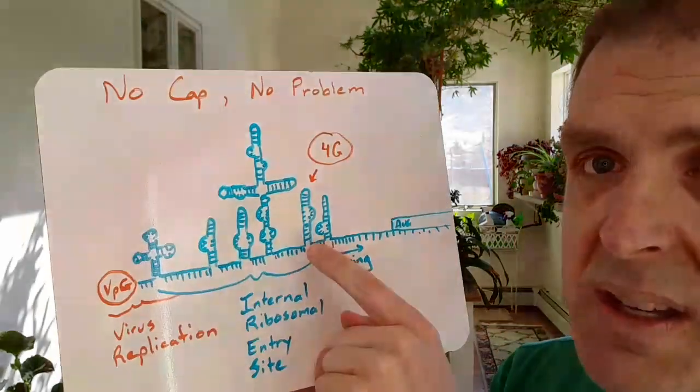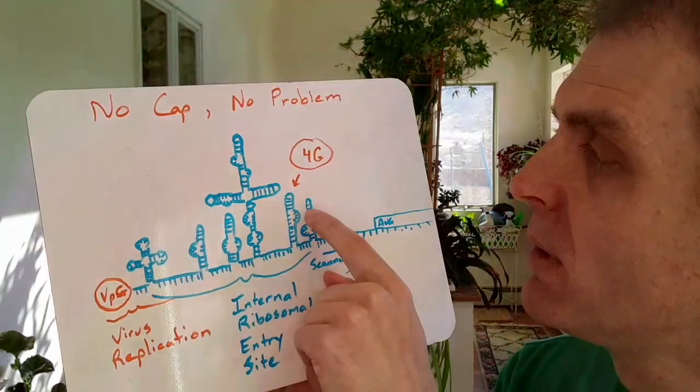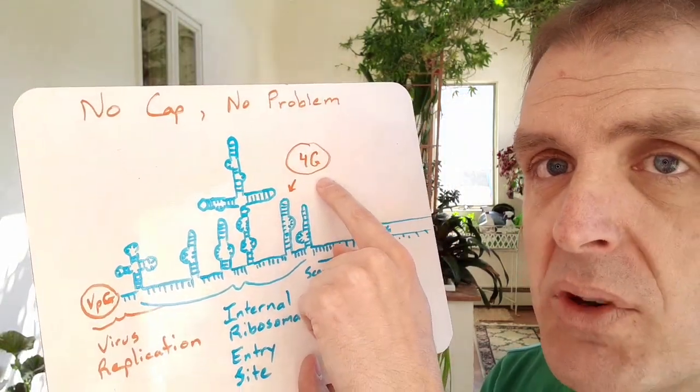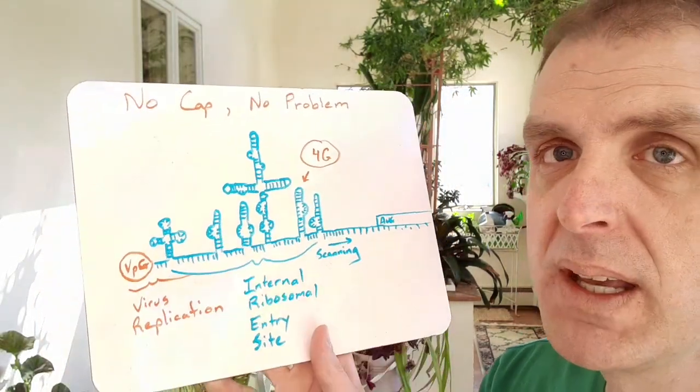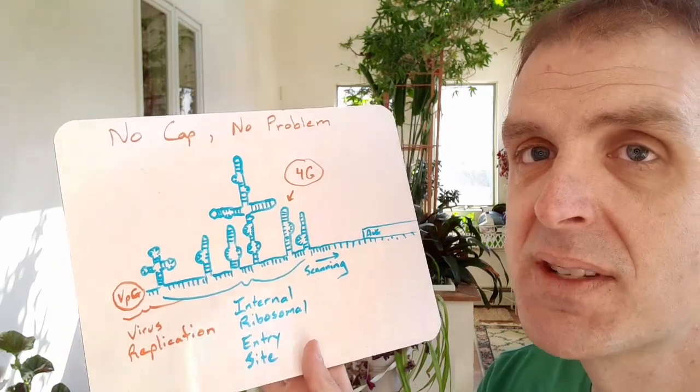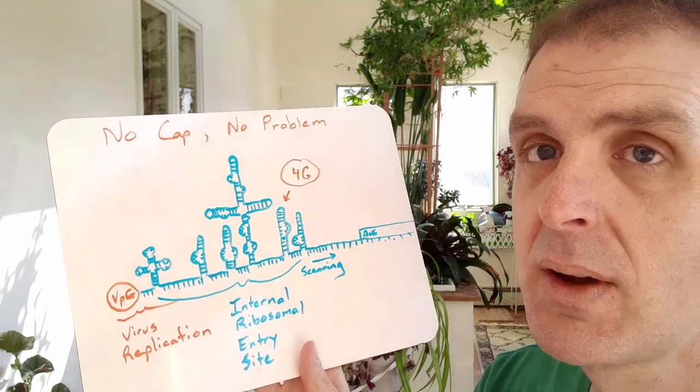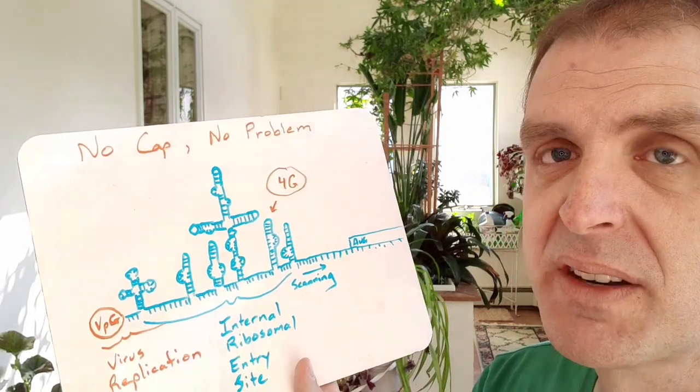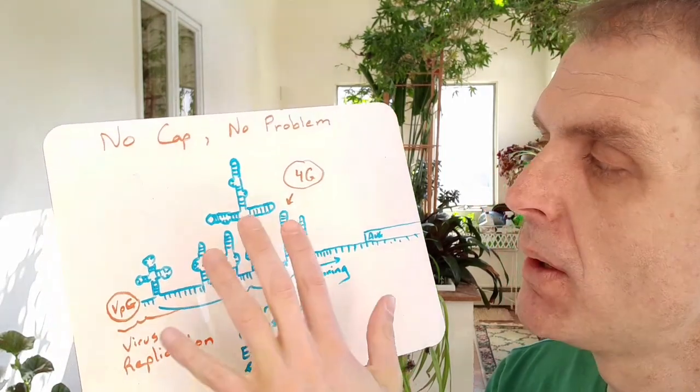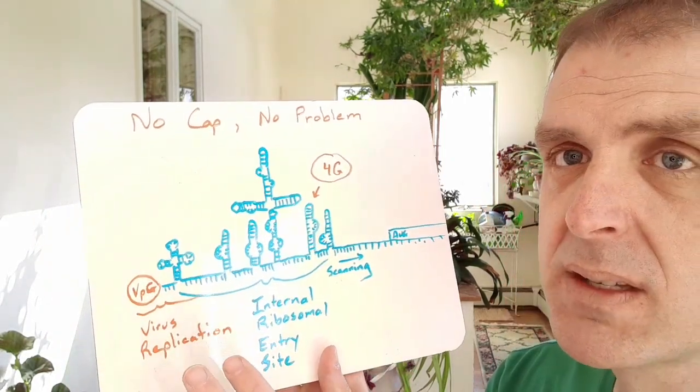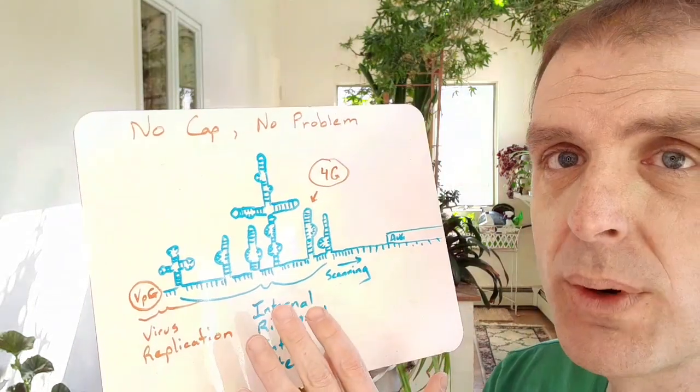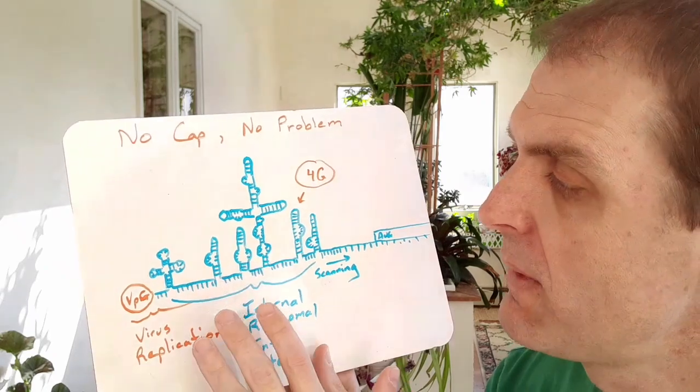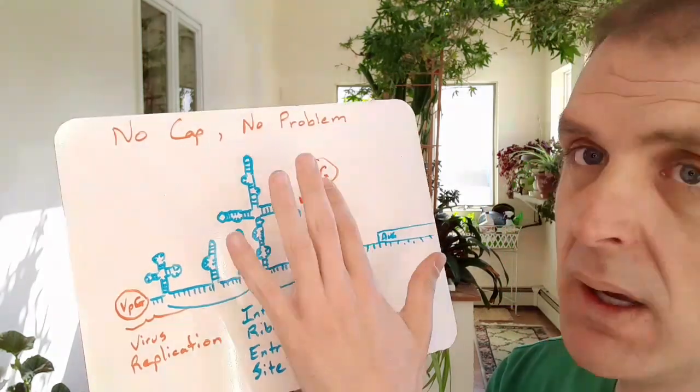There is a stem loop structure here with a bulge that is involved in recruiting EIF4G. If you remember, EIF4G like I mentioned on that first slide was the next eukaryotic initiation factor that binds to that start, that goes on to the dog pile after you've got the cap binding protein. So essentially what this is doing is that it's removing the need for the EIF4E eukaryotic initiation factor and allowing the dog pile to begin with fewer eukaryotic initiation factors than normal.